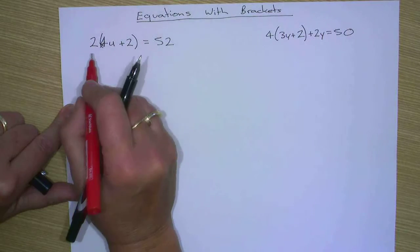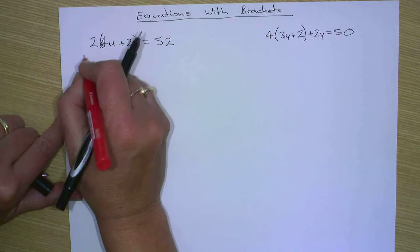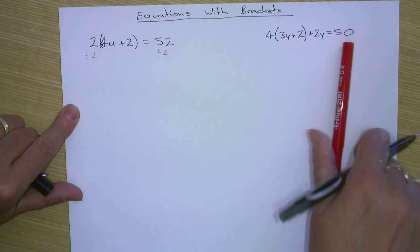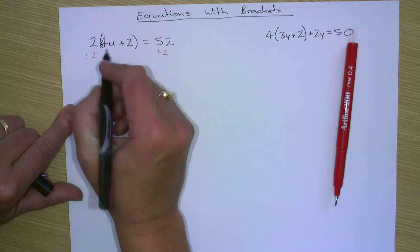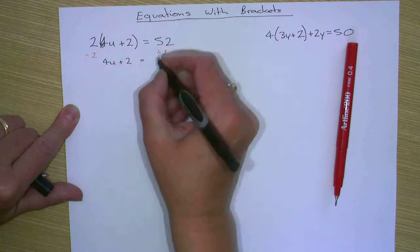So in this case, this is two times all of this stuff in brackets. So what we do is we divide both sides by two. So two into this side leaves us with four u plus two, which is 26.